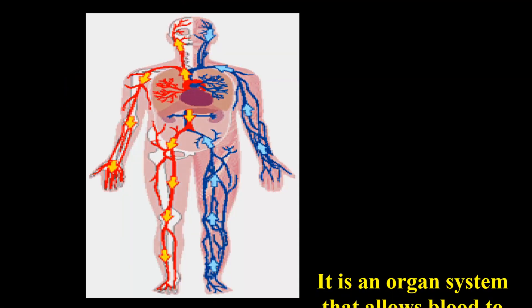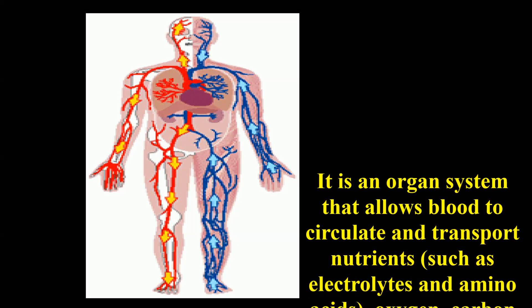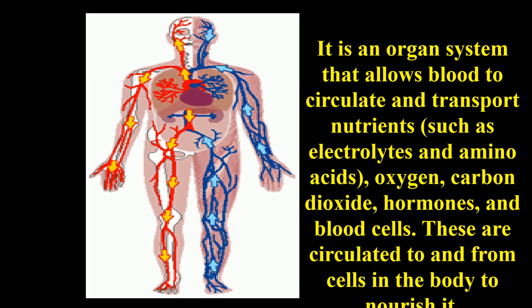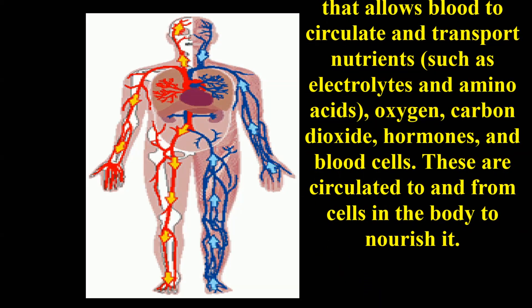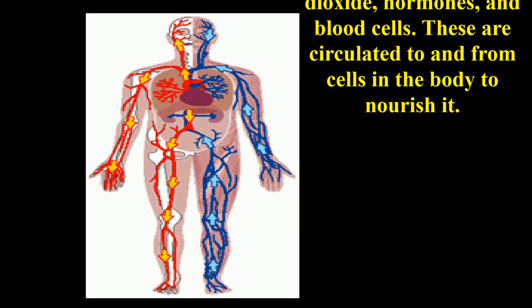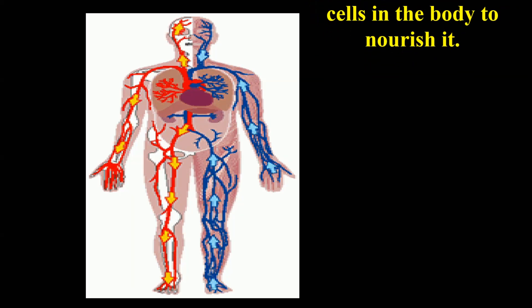It is an organ system that allows blood to circulate and transport nutrients, such as electrolytes and amino acids, oxygen, carbon dioxide, hormones, and blood cells. These are circulated to and from cells in the body to nourish it.